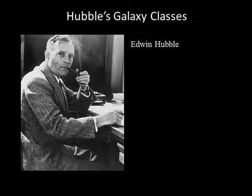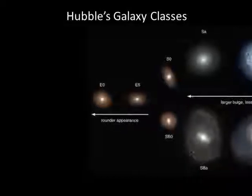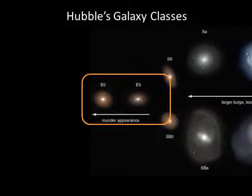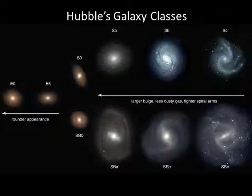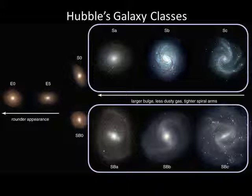The astronomer Edwin Hubble invented a system for classifying galaxies that organizes the galaxy types into a diagram shaped like a tuning fork. Elliptical galaxies appear on the handle at the left, designated by the letter E and a number. The larger the number, the flatter the elliptical galaxy — an E0 galaxy is a sphere and an E7 is highly elongated. The two forks show spiral galaxies, designated by the letter S for ordinary spirals and SB for barred spirals, followed by a lowercase a, b, or c. The bulge size decreases from a to c, while the amount of dusty gas increases.